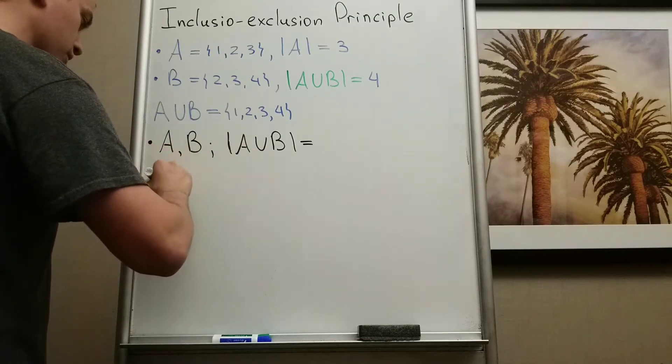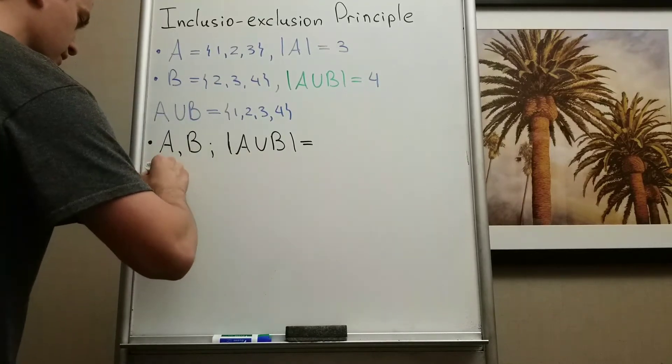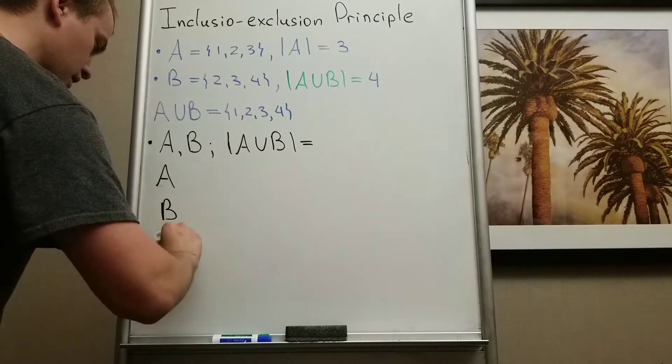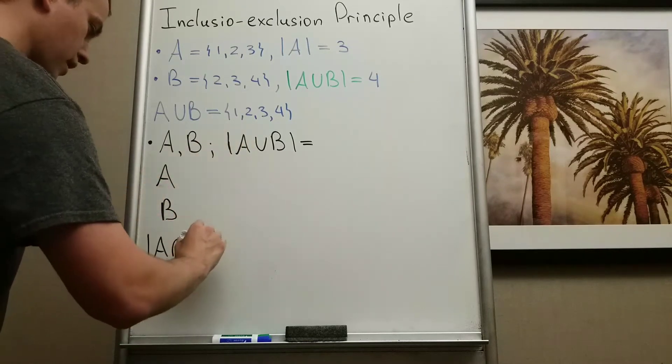And I want to write this formula in terms of set A, set B, and set A intersection B. And I want to write this formula as a cardinality.